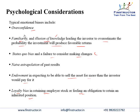To summarize, overconfidence, familiarity, illusion of knowledge, status quo, naive extrapolation, endowment, and loyalty bias are the emotional biases seen with concentrated positions. Very importantly, this may be asked in the exam — list two cognitive biases and two emotional biases seen with concentrated positions — so you must try to remember a few of these points.